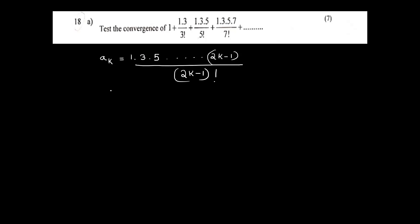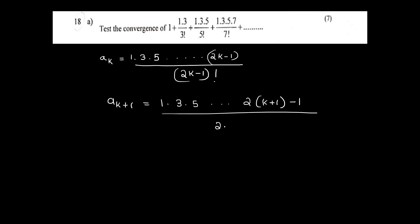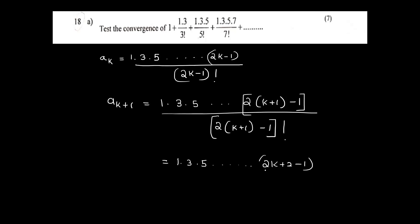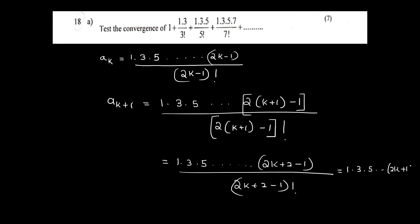Let's apply the ratio test. Ak+1 is equal to: the product 1·3·5·...·(2(k+1)−1) divided by (2(k+1)−1) factorial. That simplifies to 1·3·5·...·(2k+1) divided by (2k+1) factorial.